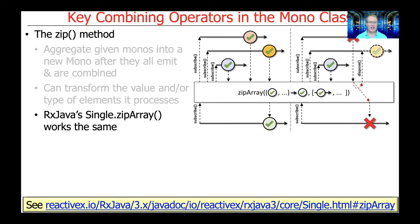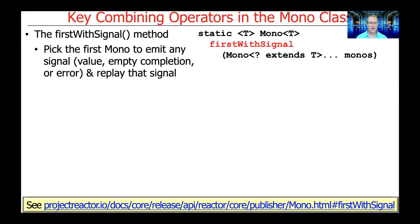There's something very similar in RxJava — they have something called the Single.zipArray method that works the same as the Zip method, just a slightly different name. That's just the history of the two projects that have kind of diverged in certain naming conventions.